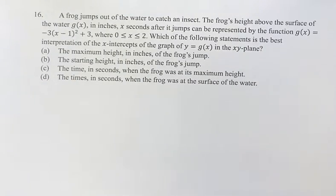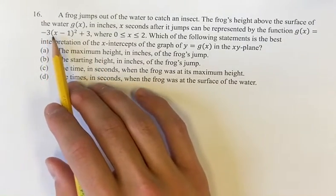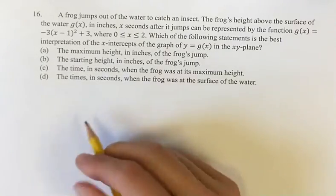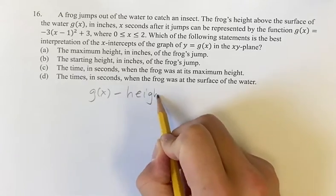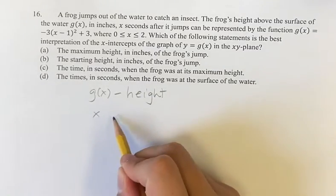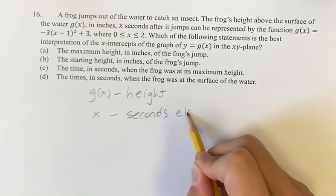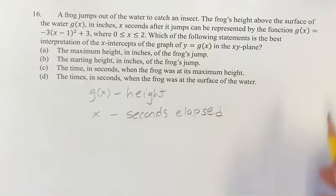Hello and welcome back to another video. This problem we're looking at the function g of x is equal to negative 3 times x minus 1 squared plus 3. G of x represents the height of a frog above the surface of the water, and x is the seconds elapsed after it jumps.